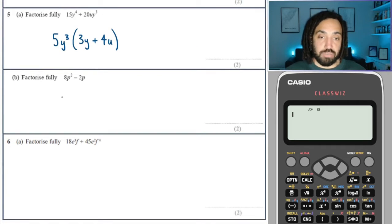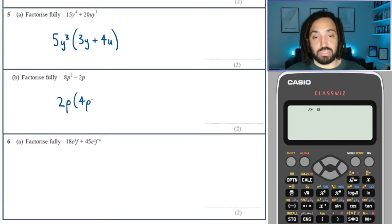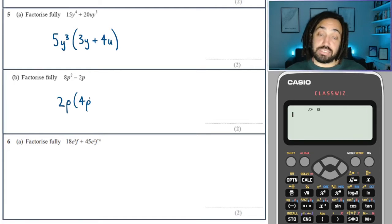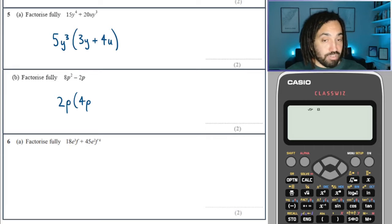Okay, I can see a two straight away, and I can see a P, which leaves a four to make eight, and another P to make P squared. And a lot of people mess this up. If I've taken out everything from a term, I've divided that whole term by itself.